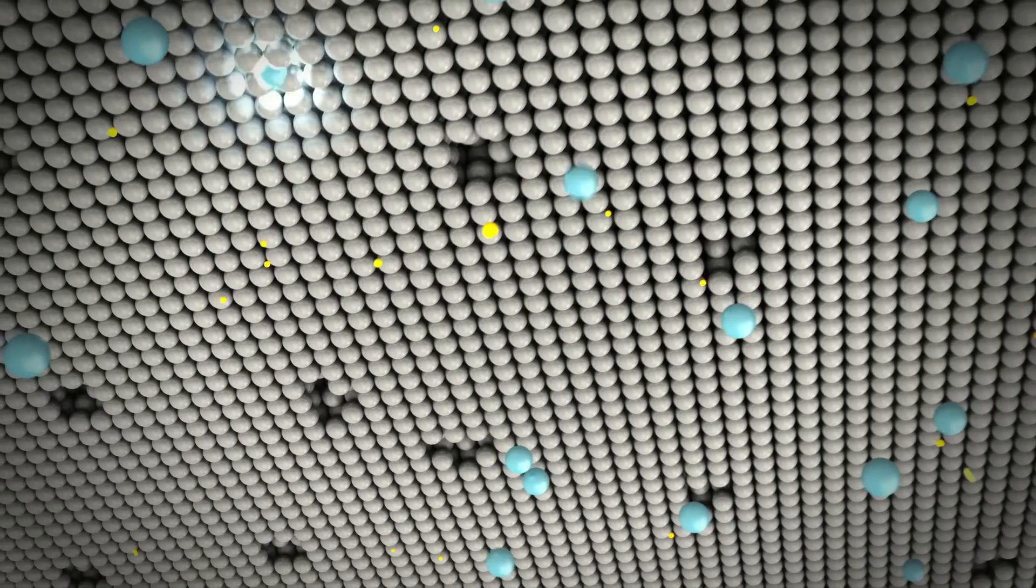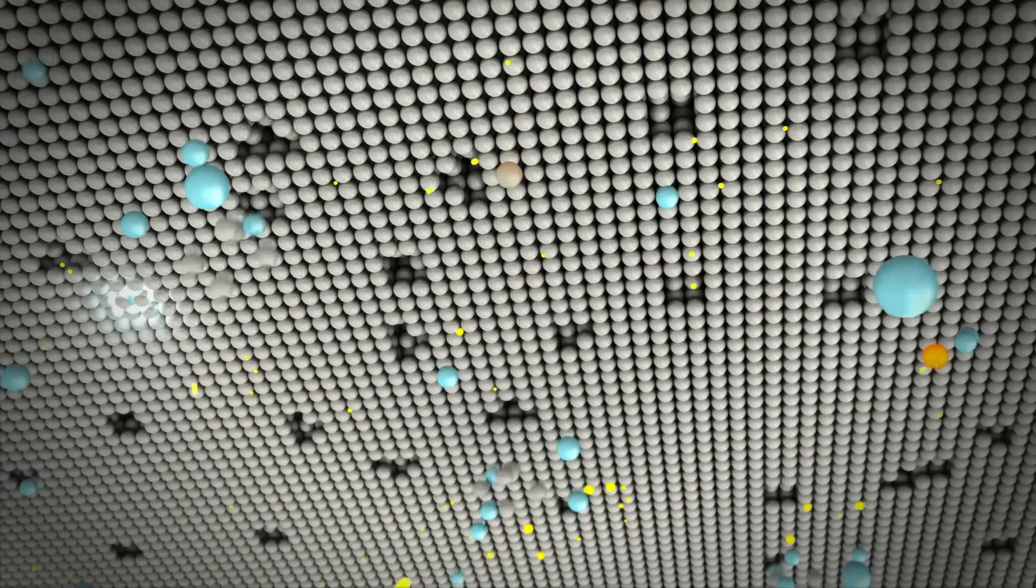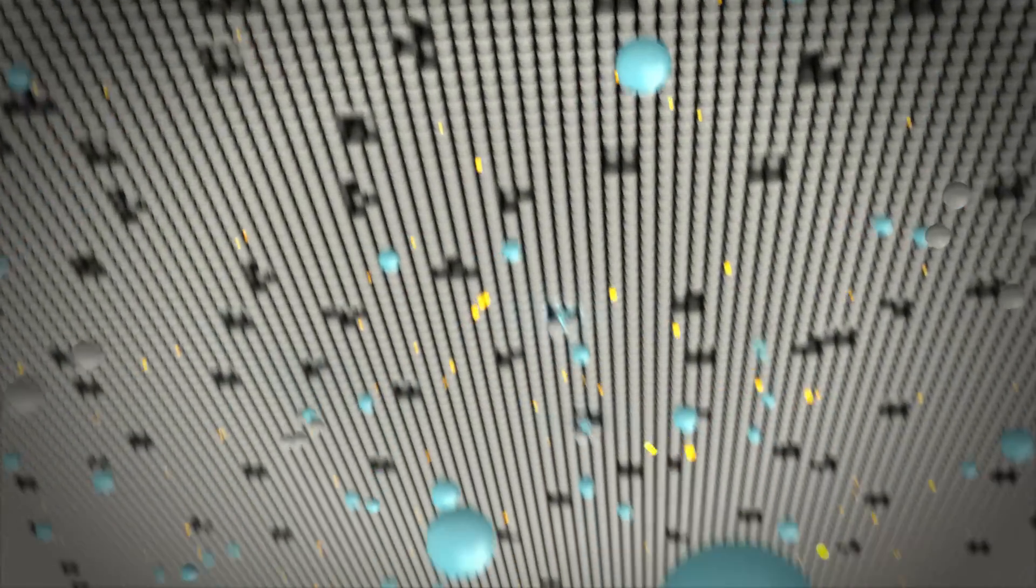Let's see what happens. The argon ions collide with the target and eject molybdenum atoms from its surface. This is what the sputtering process is all about. In a way, it resembles a game of billiards, don't you think?